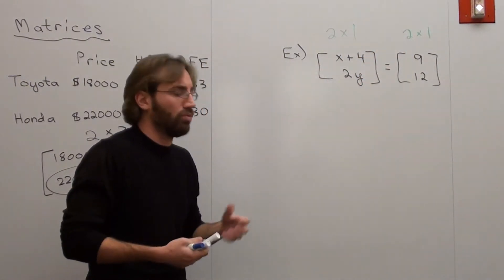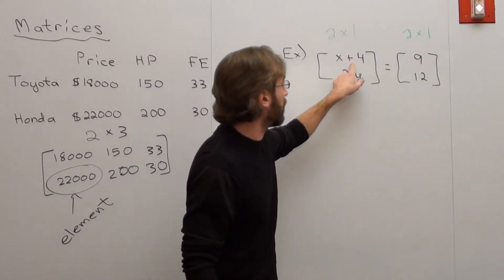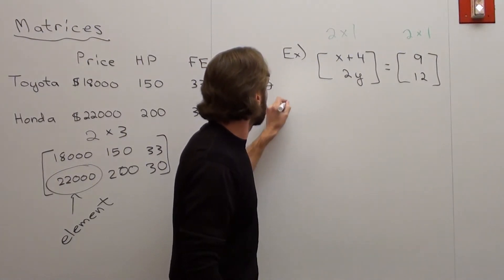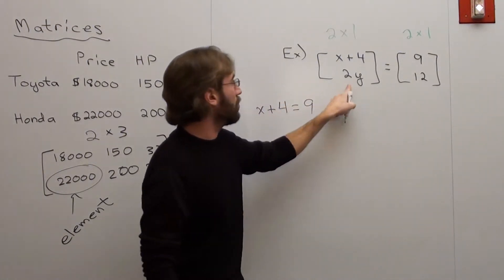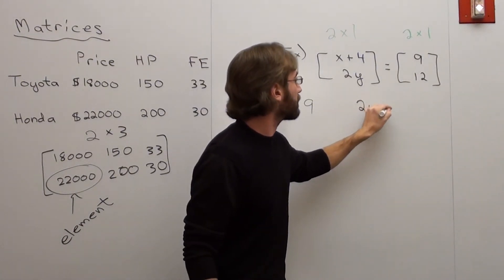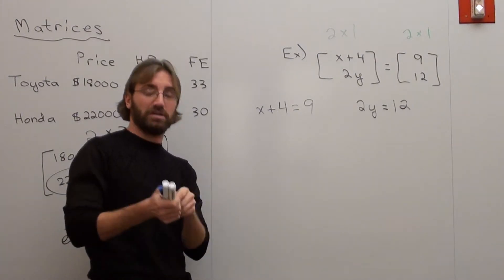Nothing really bigger. Well, what exactly do I do? I'll show you. It's actually not difficult at all. x plus four equals nine. Now, 2y equals 12. Solve for x and y. That's it? Yeah. That's it.